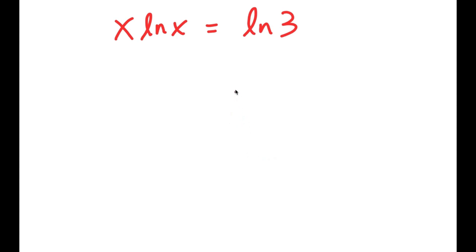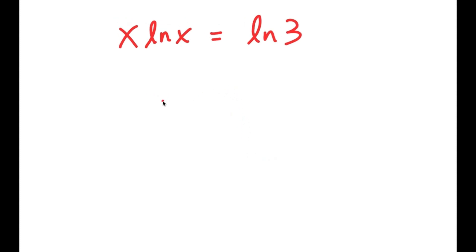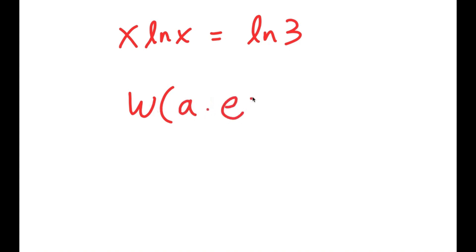Now I'm going to use an important formula called the Lambert W formula. It states that if I take W of something in the form a times e to the power of a, then this equals a. That is the Lambert W formula.